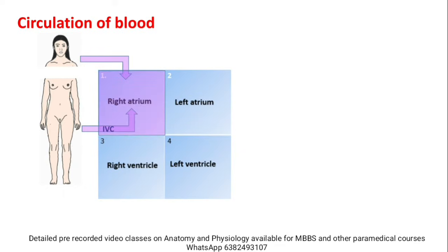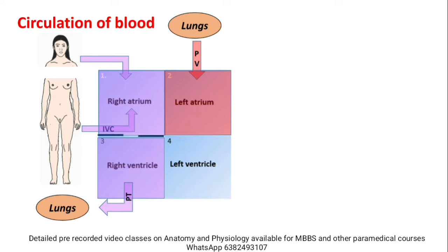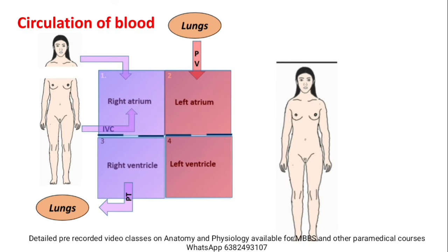From the right atrium, deoxygenated blood fills the right ventricle. From the right ventricle, blood goes to the pulmonary trunk and then to the lungs. In the lungs, the blood is purified and oxygenated. The oxygenated blood then returns via 4 pulmonary veins to the left atrium. From the left atrium, it fills the left ventricle, which then pumps oxygenated blood to the entire body.